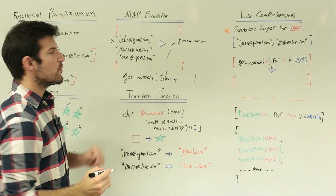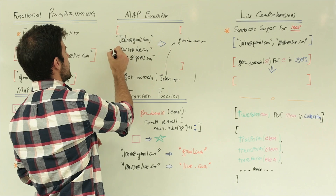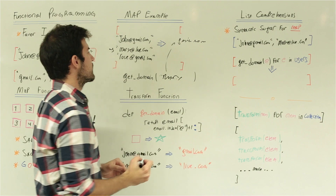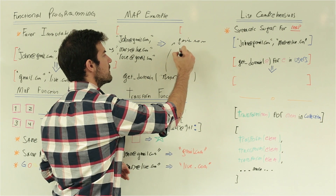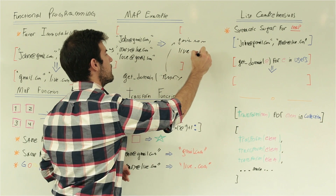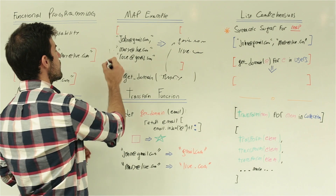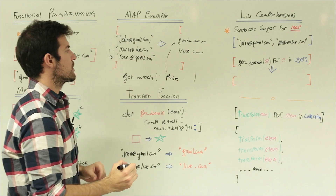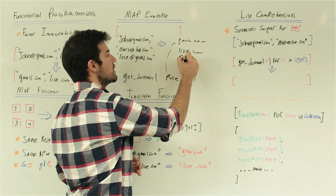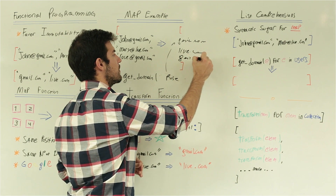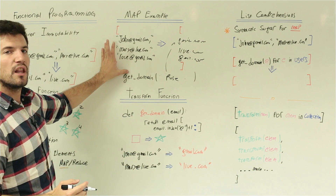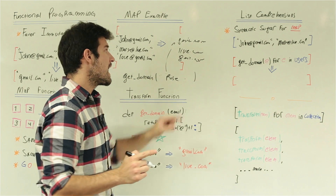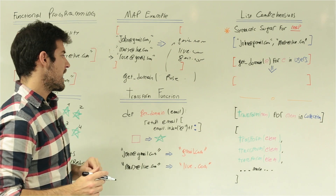We're going to move to the second email address. We pass mary@live.com and now we get live.com. Finally, we pass rose, apply the transformation, and we get gmail.com again. We are starting with our original collection, applying a transformation to each one of these elements, and getting a new collection out.